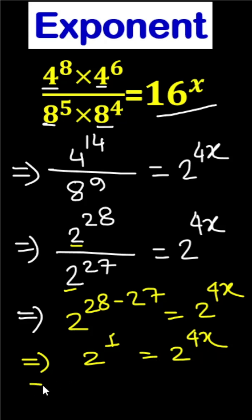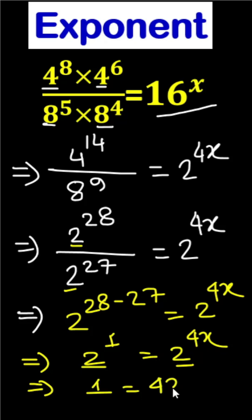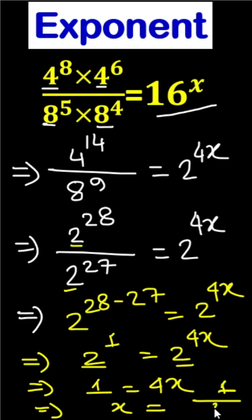And finally, look — the bases are the same, so we can write 1 equals to 4x. And finally, x equals to 1 divided by 4. This is our answer.